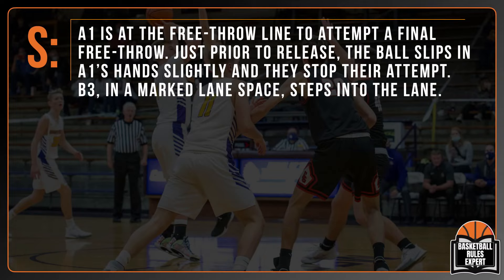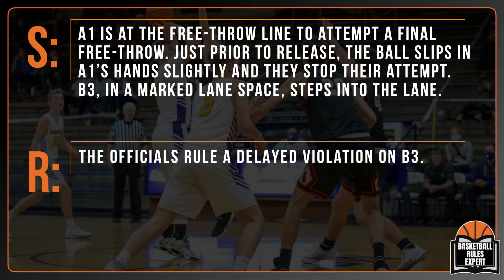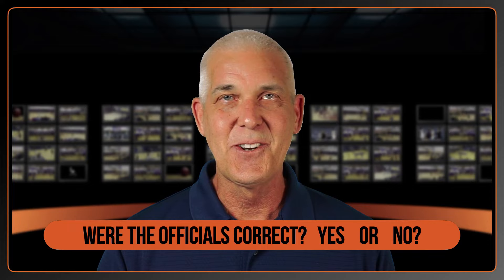Scenario 4: A1 is at the free throw line to attempt a final free throw. Just prior to release, the ball slips slightly in A1's hands and they stop their attempt. B3 in a marked lane space steps into the lane. The officials display the delayed violation signal and rule a delayed violation on B3. Were the officials correct?